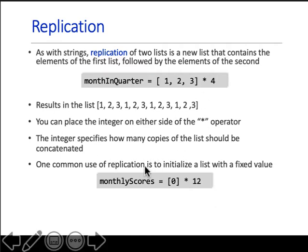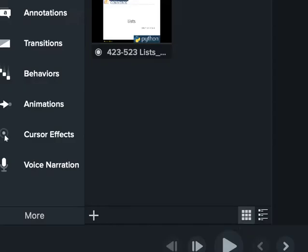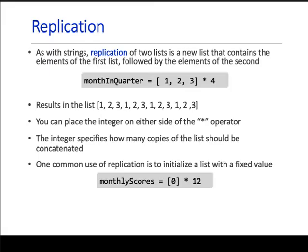One common use of replication is to initialize a list with a fixed value. When you do something like this, you will have zero repeated 12 times.